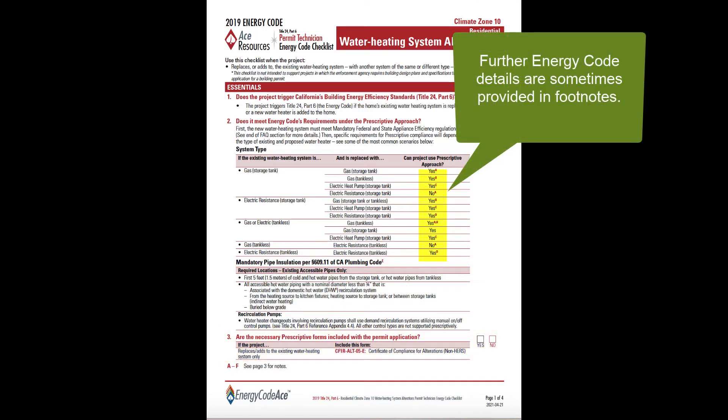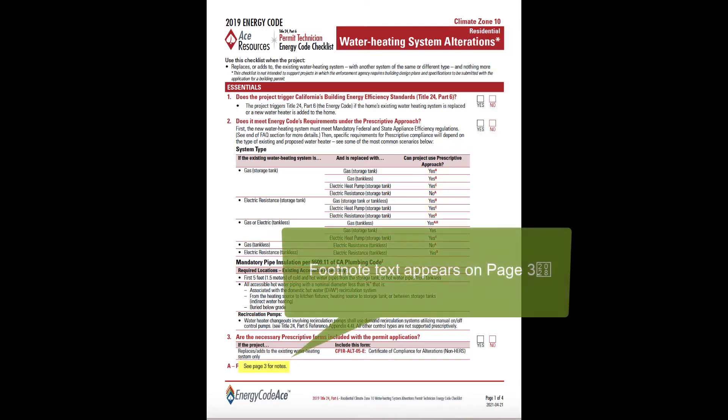Note that sometimes further energy code details are provided in footnotes. You'll find the full list of footnote text on page 3. This makes pages 1 and 3 easier to lay side-by-side when using a printout.